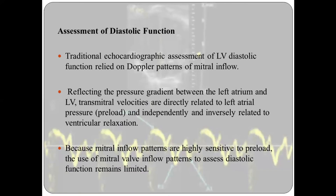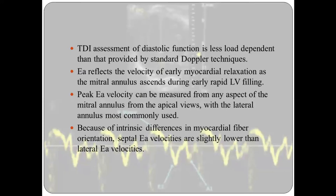Assessment of diastolic function. Traditional echocardiographic assessment of diastolic function relies on mitral inflow Doppler patterns, reflecting the pressure gradient between the left atrium and LV. Trans-mitral velocities are directly related to LA pressure overload and inversely related to ventricular relaxation. Because mitral inflow patterns are highly sensitive to preload, their use to assess diastolic function remains limited. Tissue Doppler imaging assessment of diastolic function is less load dependent. E' reflects the velocity of early myocardial relaxation as the mitral annulus ascends during early rapid LV filling. The peak E' velocity can be measured from any aspect of the mitral annulus; the lateral annulus is most commonly used.